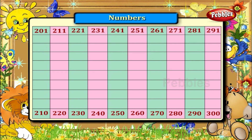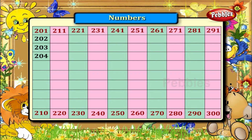Write the missing numbers from 201 to 300. Let us first find out the numbers between 201 and 210. They are 202, 203, 204, 205, 206, 207, 208 and 209.